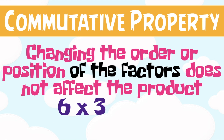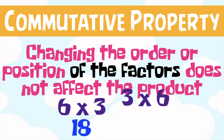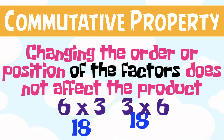For example, 6 times 3 is equal to 18, and 3 times 6 is equal to 18. So using the commutative property, 6 times 3 is equal to 3 times 6.